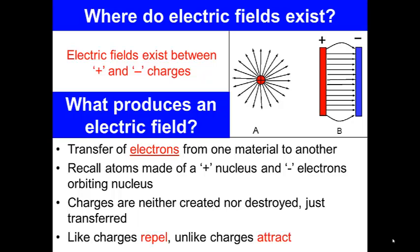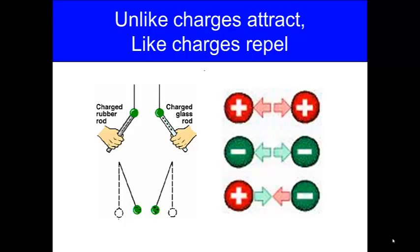Like charges repel, unlike charges attract. So here we have unlike charges attract, so you have the positive and the negative attracting. You have the positive and positive repelling, the negative and negative repelling, and the positive and negative attracting.